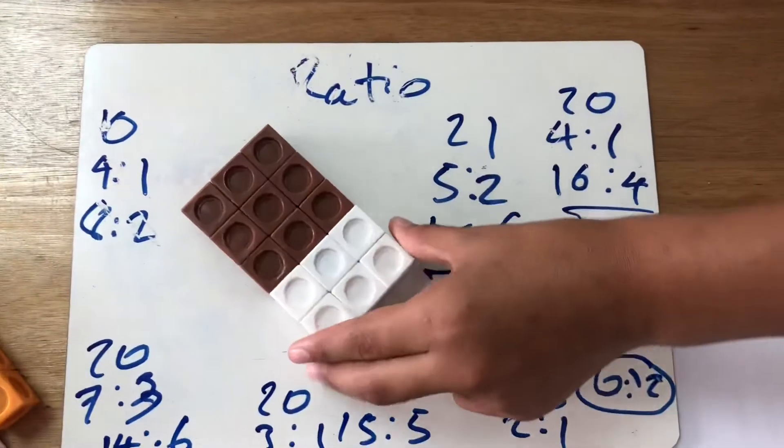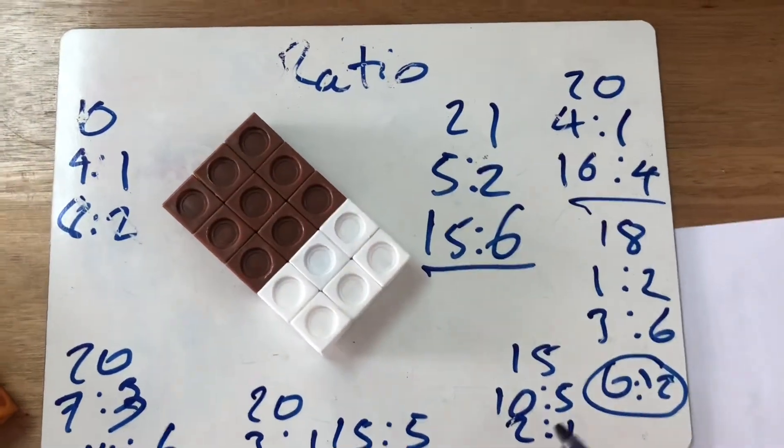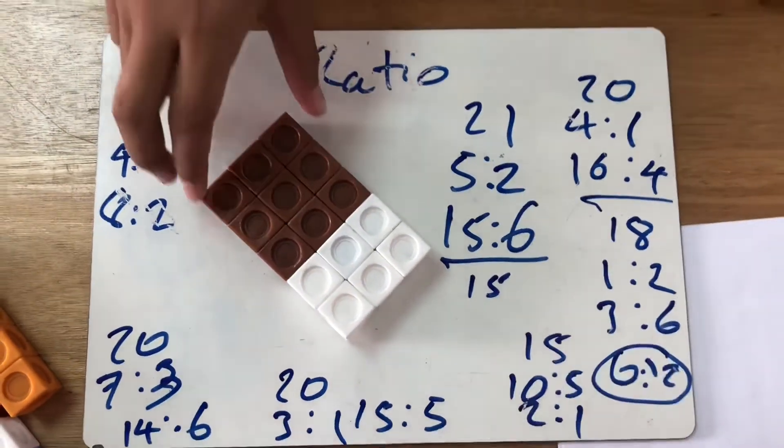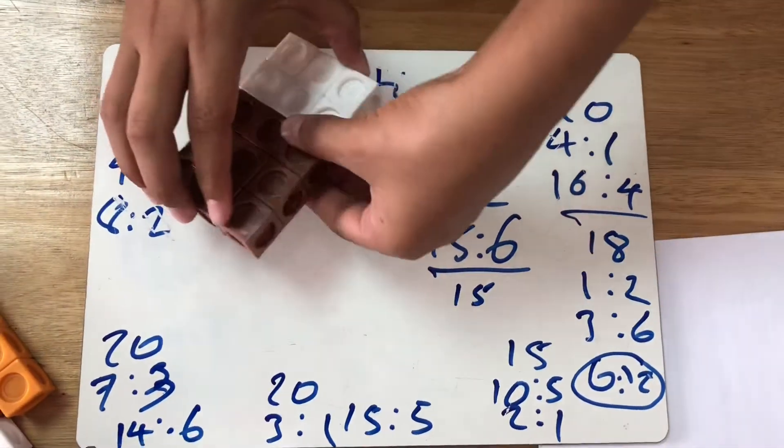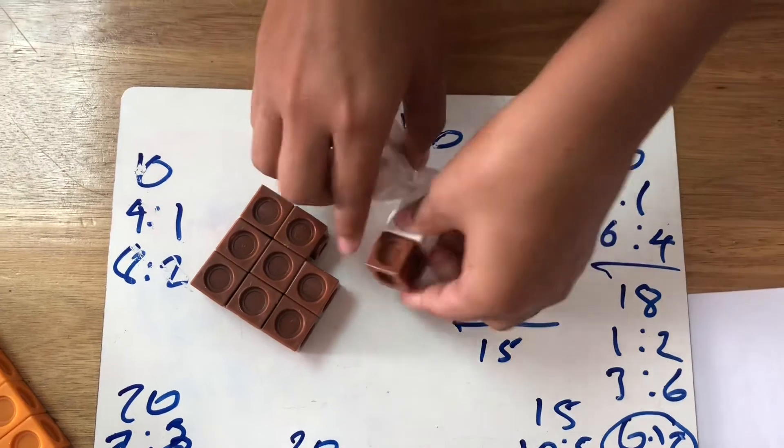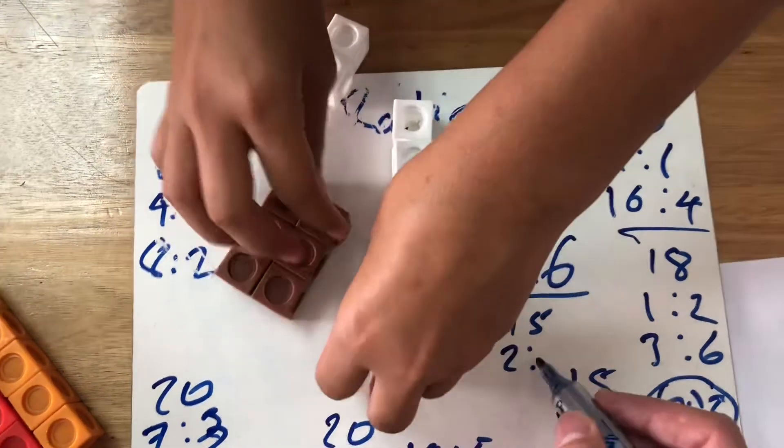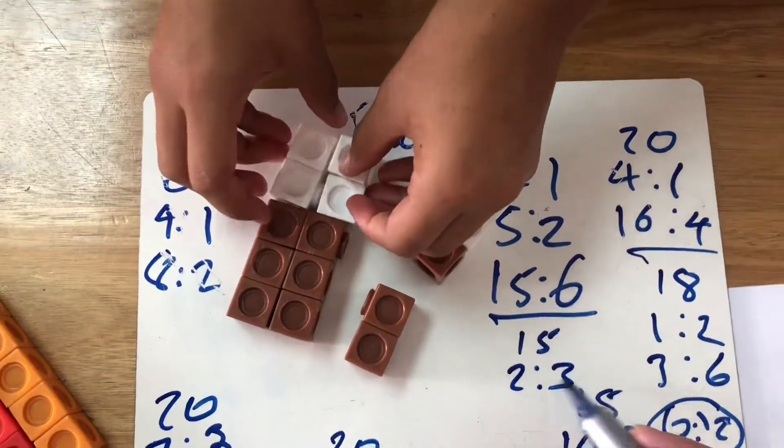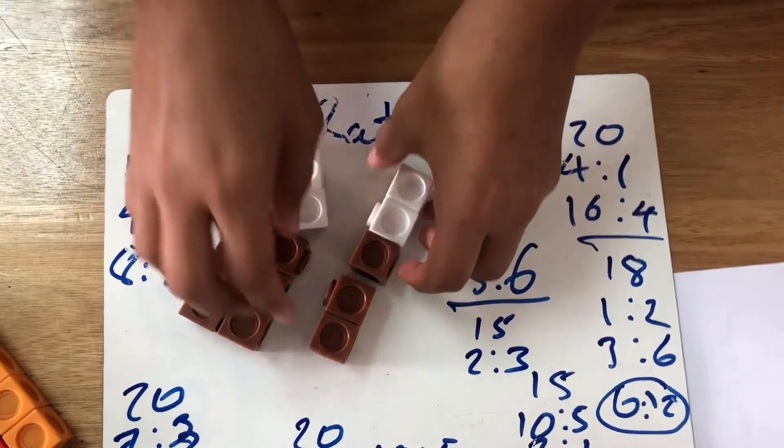Let's see. So how many is the total we got here? 15. And what are you breaking it up in the ratio of? You've got 2 whites there and 3 browns. So it's 2 to 3? Yeah.